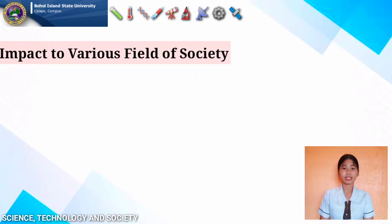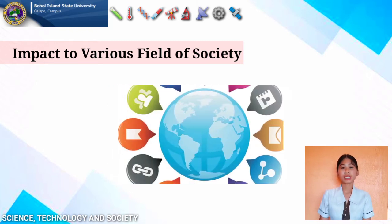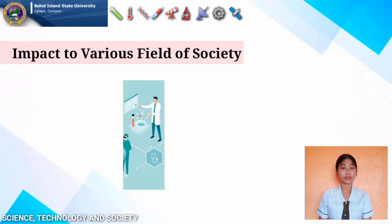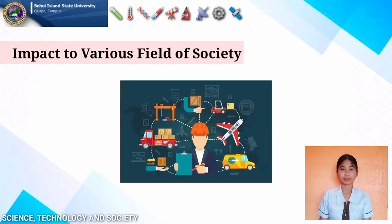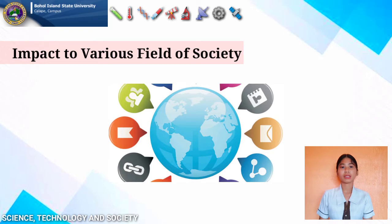Now we have the impact of science and technology. Science and technology creates impact to various fields of society: communication, education, agriculture, medicine, and transportation. In the field of communication, this has really innovated — from sending letters, to the next generation of telephones, and up until now with smartphones.